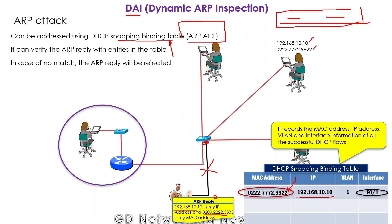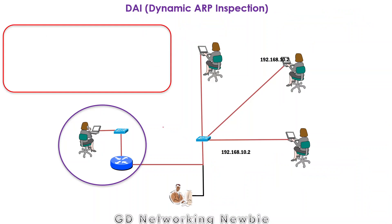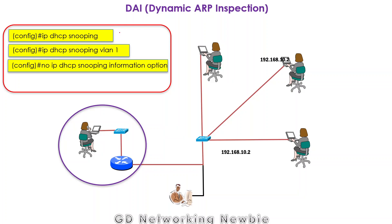Now let's look at the commands used in Cisco Packet Tracer to enable this feature. First, we need the DHCP snooping binding table. To create it, we use the commands for configuring DHCP snooping on the switches: one command to enable DHCP snooping, and another to specify the VLAN where we want to use it.